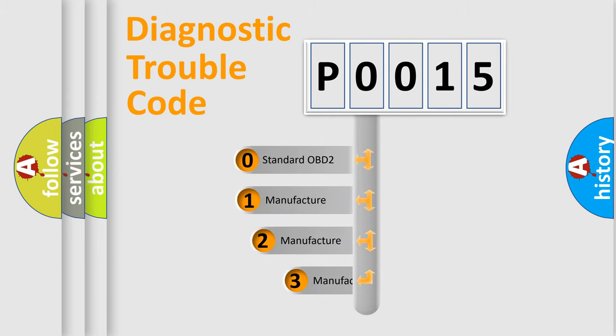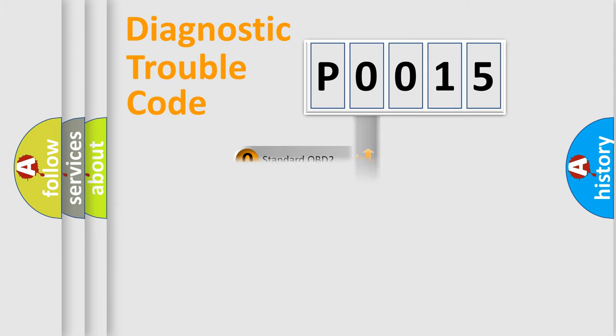If the second character is expressed as zero, it is a standardized error. In the case of numbers one, two, or three, it is a more prestigious expression of the car-specific error.